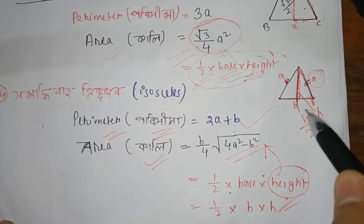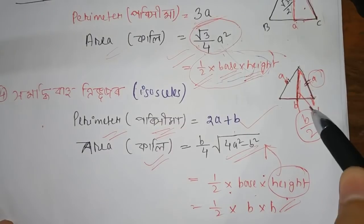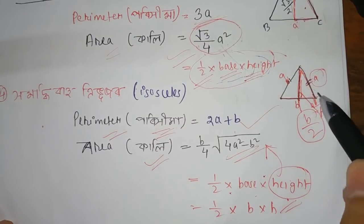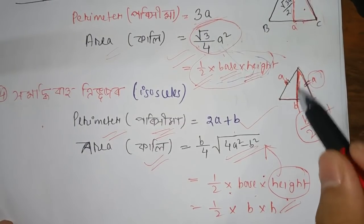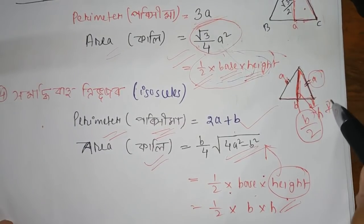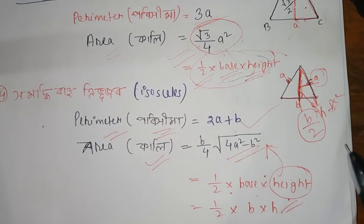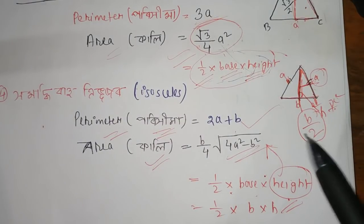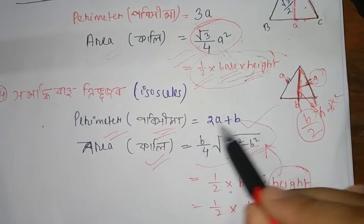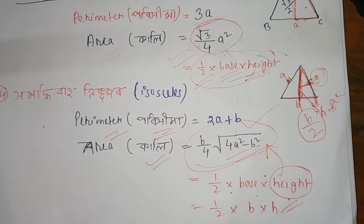This is b by 2. Height is applied using Pythagoras theorem: a square is equal to b by 2 whole square plus a square. This is b by 2, so height calculation is fine.